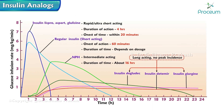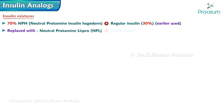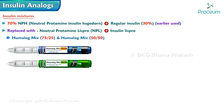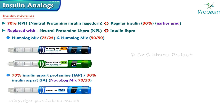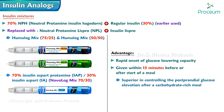Insulin mixtures — premixed combinations previously used were 70% NPH with 30% regular insulin. These have been replaced with combinations of neutral protamine lispro (NPL) and insulin lispro: Humalog Mix 75/25, Humalog Mix 50/50, and 70% insulin aspart protamine with 30% insulin aspart (NovoLog Mix 70/30). These are advantageous as they have rapid onset, can be given within 15 minutes before or after a meal, and are superior in controlling postprandial glucose elevation after a carbohydrate-rich meal.